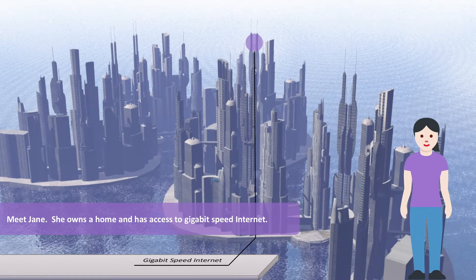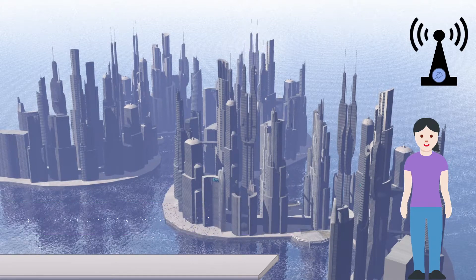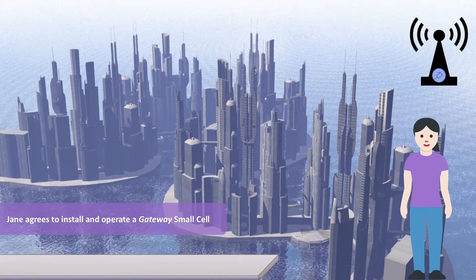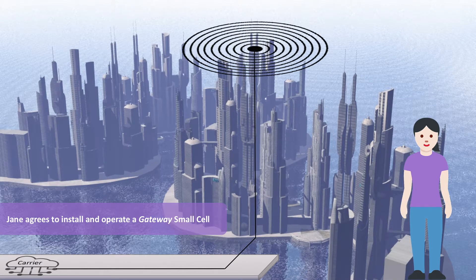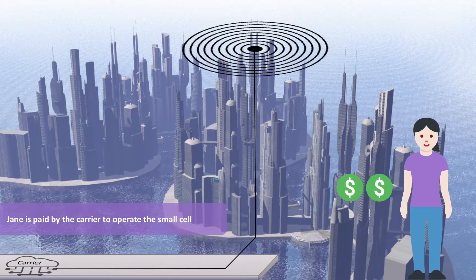Meet Jane as an example. She owns a home and she has access to gigabit speed internet. Jane agrees to install and operate a gateway small cell radio for the carrier. For this, Jane is paid by the carrier as she operates that small cell.